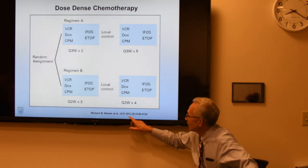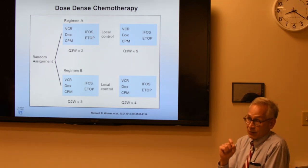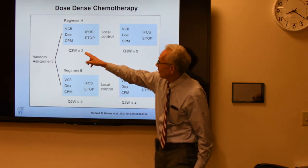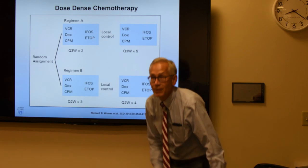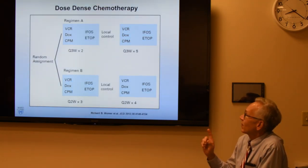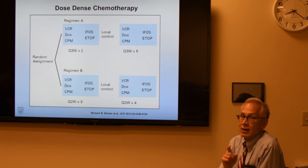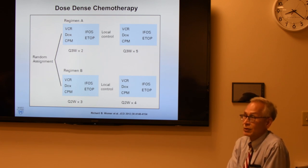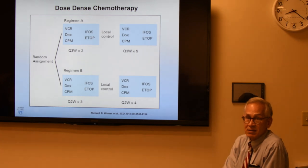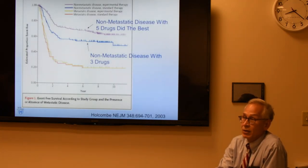Then in 2012, a study was done — no longer three versus five drugs since we already proved five is better. The question was: give those same five drugs every two weeks or every three weeks? This is called dose-dense therapy. It turned out that five drugs repeated every two weeks is better than every three weeks. So if you're getting chemotherapy for Ewing sarcoma, even as an adult, we tend to start with an every-two-week regimen. Without chemotherapy, 80–90% will have metastasis despite surgery, but with chemo the cure rate is getting close to 70–80%.